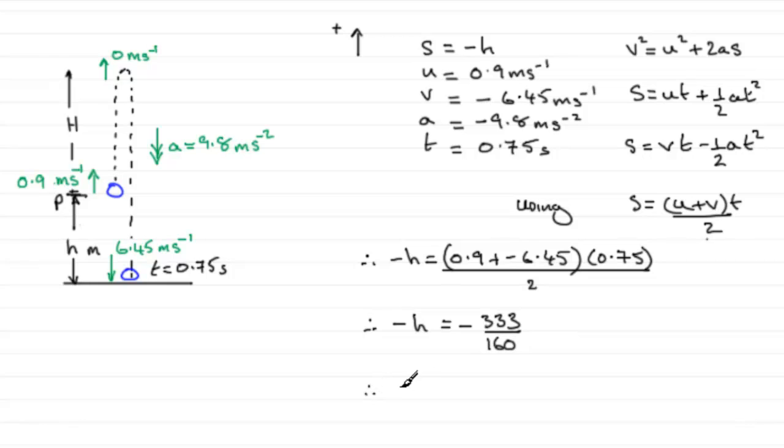You end there for H is exactly 333 over 160. Or you could write this as a decimal. And if you do, you're going to get 2.081 and so on.